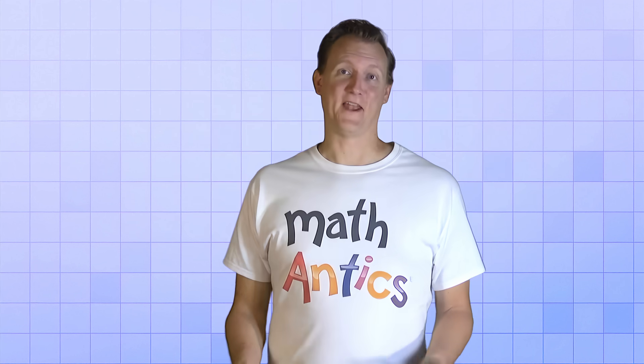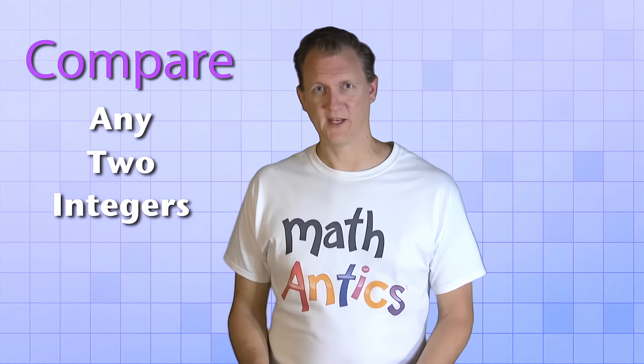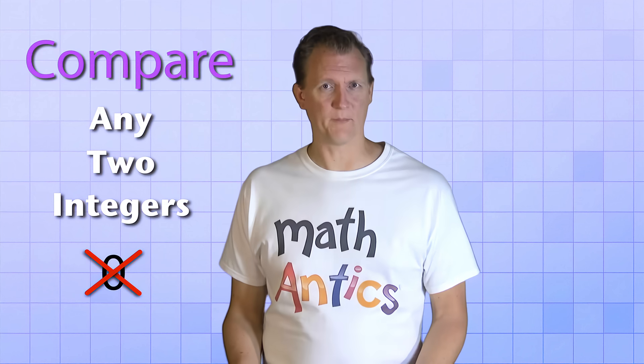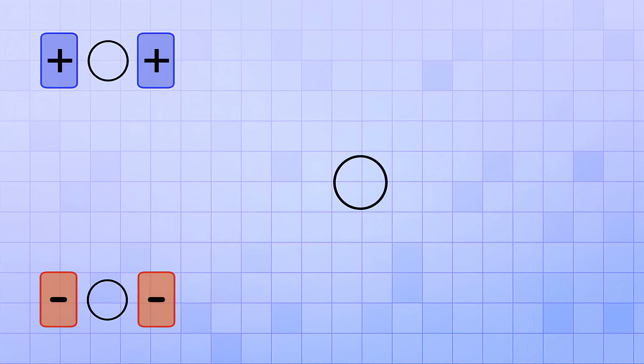Okay, now that you know how negative numbers work, let's see how we can compare any two integers. If we don't include zero for a moment, basically there's just three situations. You'll either need to compare two positive integers, or two negative integers, or one positive and one negative integer.